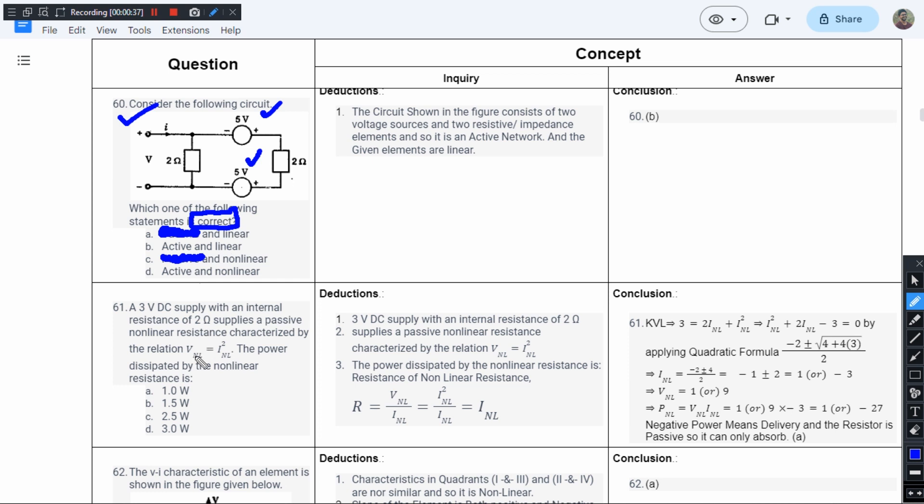Now I have to observe option B and option D. Either one could be correct. In order for us to judge the linearity and non-linearity, we have to observe the passive elements.